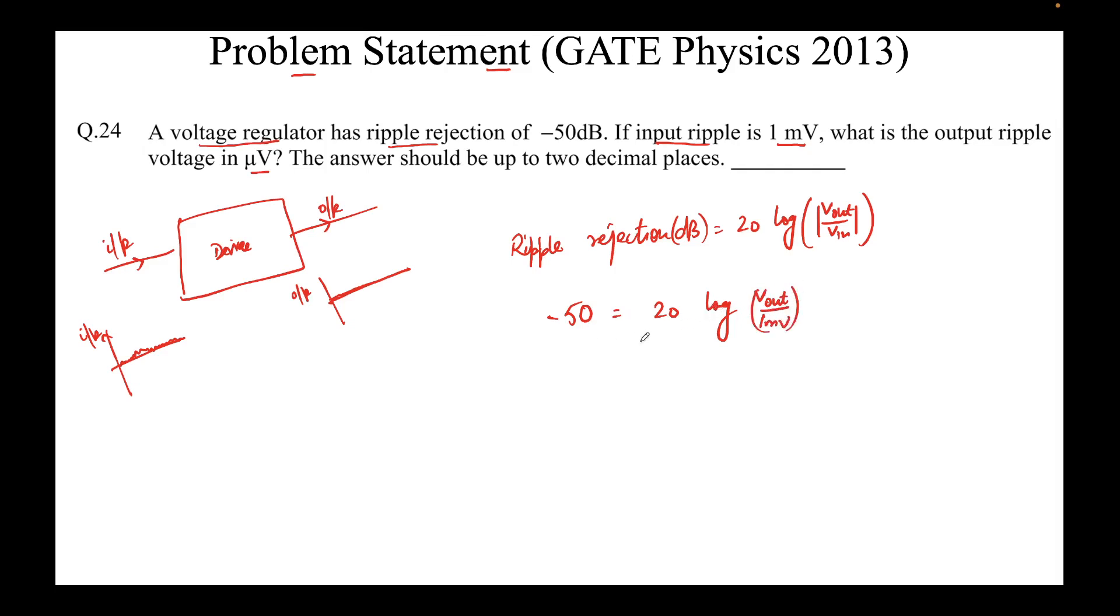I will take the terms here. So, we will get log of v_out over 1 millivolt. So, this will give us minus 2.5. v_out over 1 millivolt equals 10 to the power minus 2.5, and ultimately we can write that the value of v_out as 1 millivolt into 10 to the power minus 2.5 is 3.16 into 10 to the power minus 3.